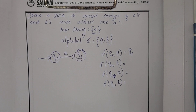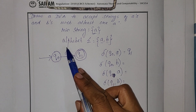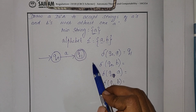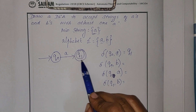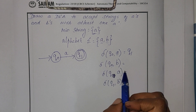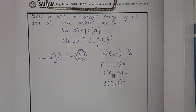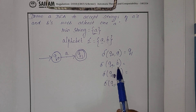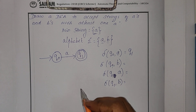Checking which transitions are available in the diagram: Q0 comma B — not available. Q1 comma A — not available. Q1 comma B — not available. So these three transitions I am supposed to find now. Let us find Q0 comma B.